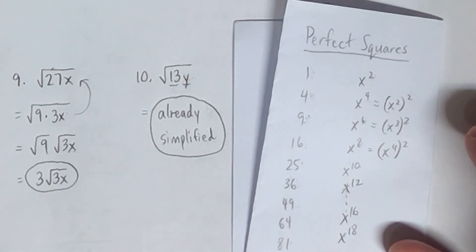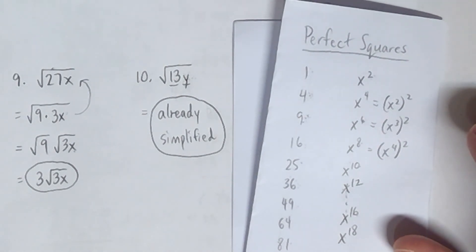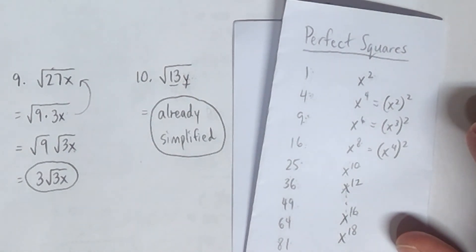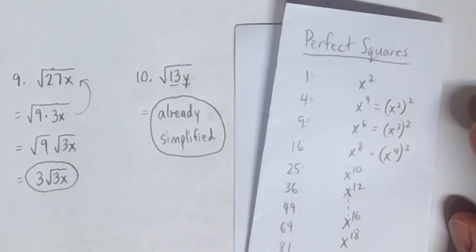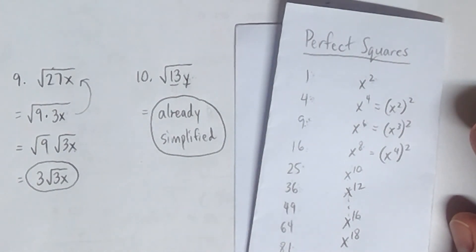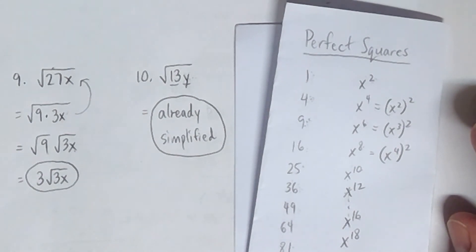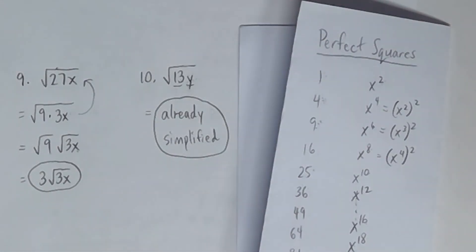So that is how you simplify radicals — that's going to be a very important thing to understand for the next couple of sections. Let me know if you have any questions about it so that you're prepared not only to do this homework assignment, but also to learn in the next couple of sections coming up. Have a good day, take care, and we'll see you back for section 9.3.